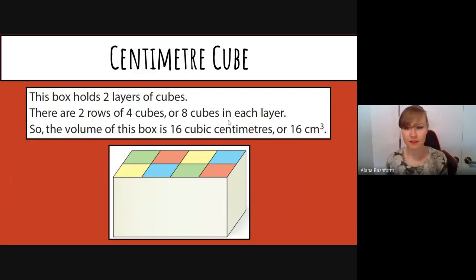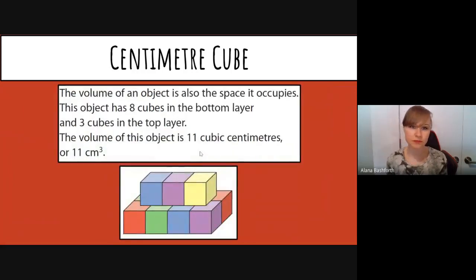The volume of an object is also the space it occupies. This object has eight cubes on the bottom layer and three cubes on the top layer. The volume of this object is 11 cubic centimeters, or 11 centimeters cubed.